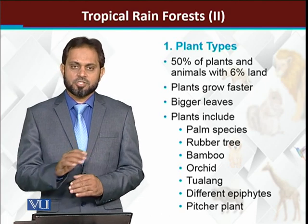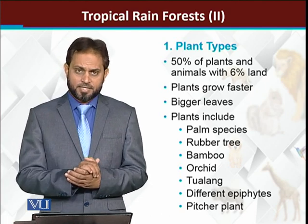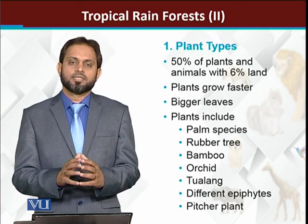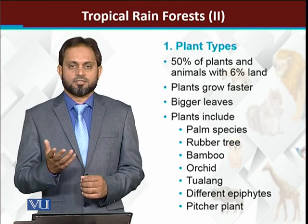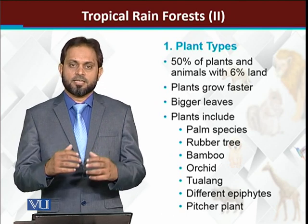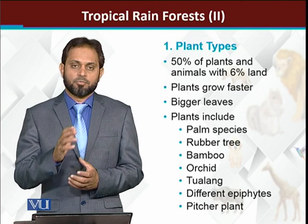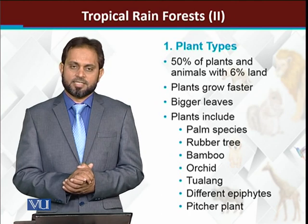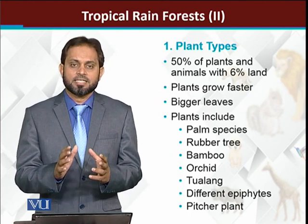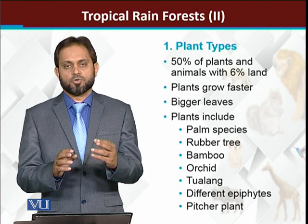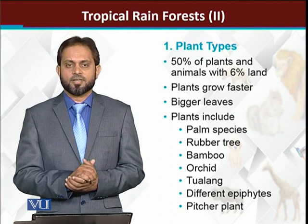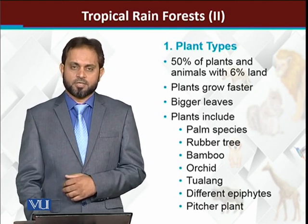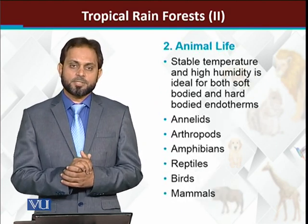Shrubs and herbs are also reported. In the tropical ecosystem, large trees called tolung — which are basically huge-sized trees — are mostly present in Southeast Asia, in Malaysia and Indonesia. Different types of epiphytes and other plants are also reported.